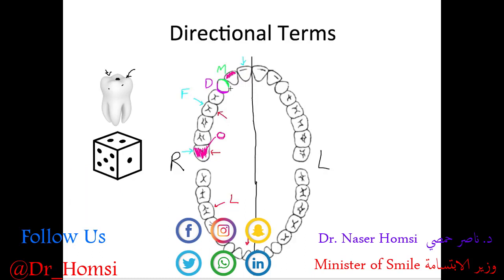Those are the five basic tooth surfaces, but it gets a bit more specific when comparing anterior and posterior teeth. For the anterior teeth — the incisors and canines — the facial surface can also be called the labial surface, because it's up against the inside of the lips. This is just a more specific way to refer to the facial surface of anterior teeth.